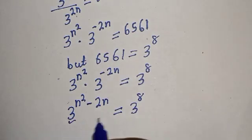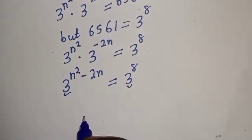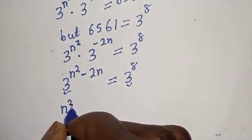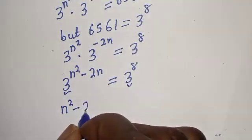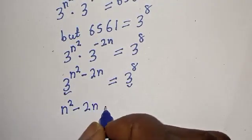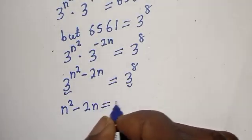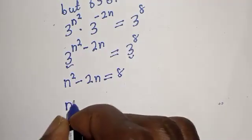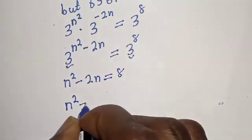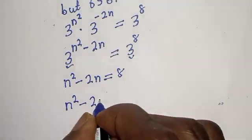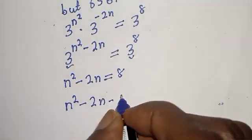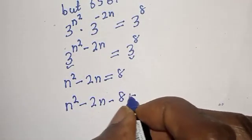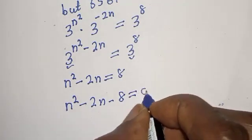We apply the same base theorem. Since the bases are equal, the exponents must be equal: n squared minus 2n equals 8. Then, rearranging, n squared minus 2n minus 8 equals 0.